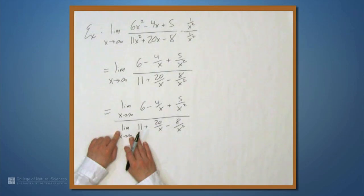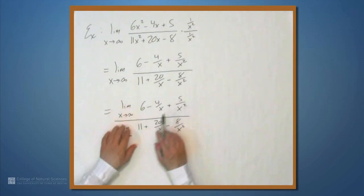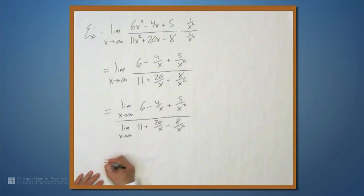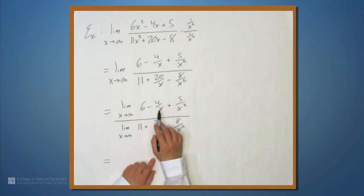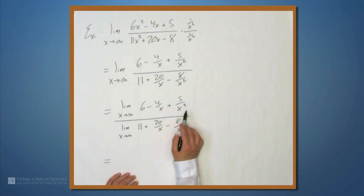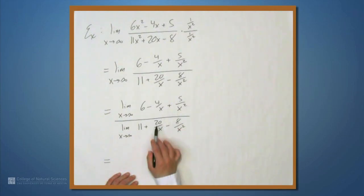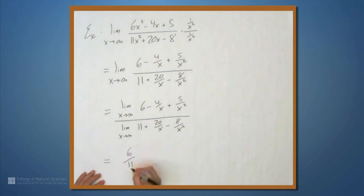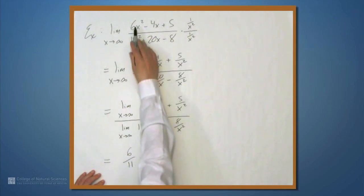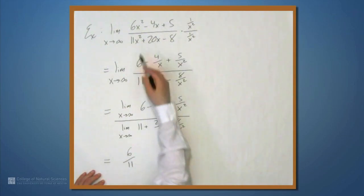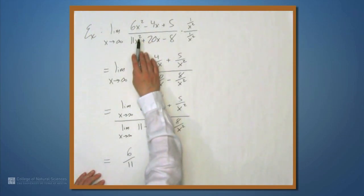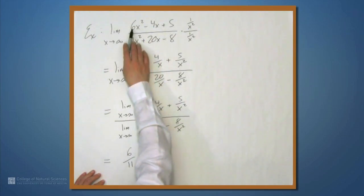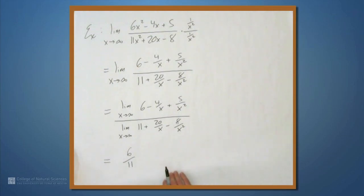So we get the ratio of the limits. Being really thorough, the limit of the numerator is the limit of 6 minus the limit of 4 over x plus the limit of 5 over x squared. As x goes to infinity, 4 over x goes to 0, and 5 over x squared goes to 0. In the denominator, 20 over x and 8 over x squared both go to 0. All we're left with is 6 over 11. It's not a coincidence — whenever you have a ratio of polynomials where the leading terms have the same power, the limit is just the ratio of the leading coefficients.